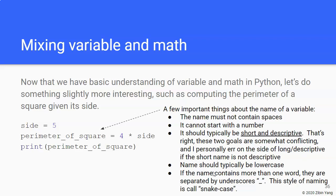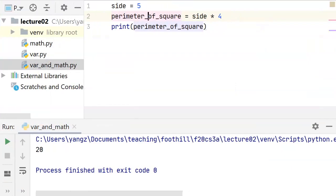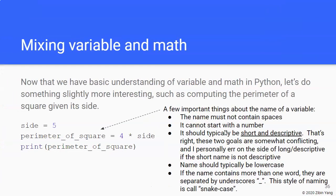And then lastly, if the name contains more than one word, as in this case, perimeter of square, to help with readability you can separate those words with the underscore character. And this style of naming variables or naming anything is called snake_case because I guess it kind of looks like a little snake.